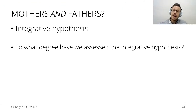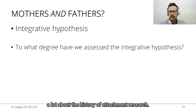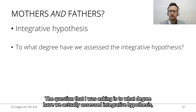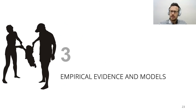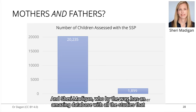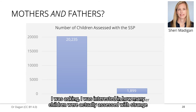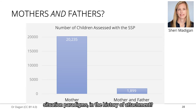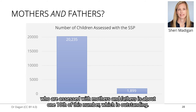I wanted to share something interesting because I think it tells a lot about the history of attachment research. The question I was asking is: to what degree have we actually assessed the integrative hypothesis? Sherry Madigan, who has an amazing database with all studies that ever conducted attachment in children, helped me put together this bar chart. I was interested in how many children were actually assessed with Strange Situation paradigms in the history of attachment — about 20,000.